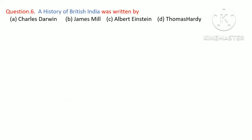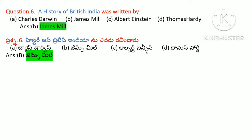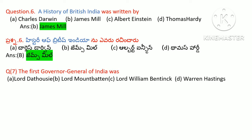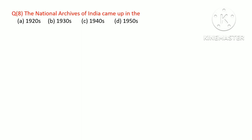The History of British India was written by — the answer is James Mill. The first governor general of India was — the answer is Warren Hastings. The National Archives of India was established in 1920.